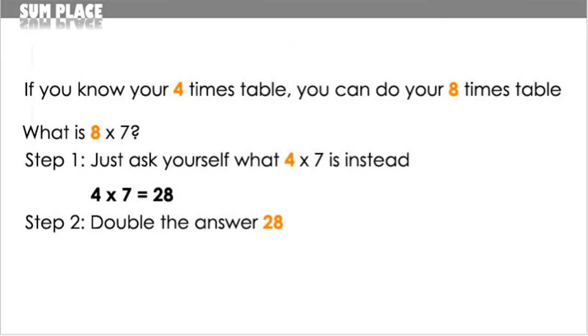Step 2: double the answer to step 1, which is 28. Double 28, which is the same as multiplying it by 2, equals 56. 28 times 2 equals 56. And that's your answer: 56. 8 times 7 equals 56.